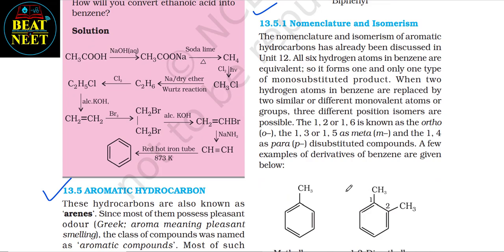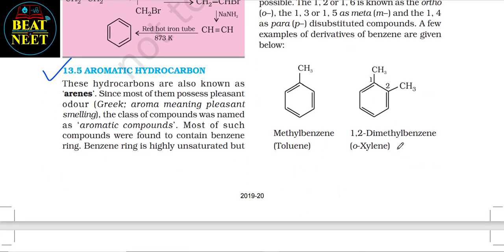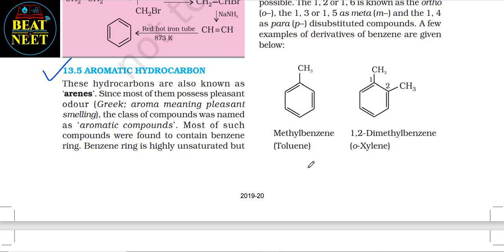13.5.1 Nomenclature and isomerism: all six hydrogen atoms in benzene are equivalent, so it forms only one type of monosubstituted product. When two hydrogen atoms in benzene are replaced by two similar or different monovalent atoms or groups, three different position isomers are possible: the 1,2 (ortho), 1,3 (meta), and 1,4 (para) disubstituted compounds. Examples include methylbenzene (toluene) and 1,2-dimethylbenzene (ortho-xylene).